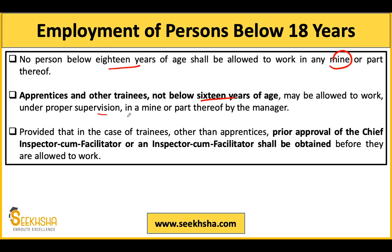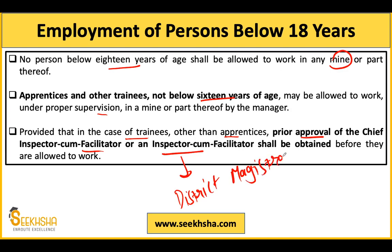For trainees other than apprentices, prior approval of the Chief Inspector cum Facilitator or Inspector cum Facilitator must be obtained before appointment. As mentioned in the last class, the Inspector cum Facilitator for mines is the District Magistrate. So, the District Magistrate acts as the Inspector cum Facilitator in the case of mines.